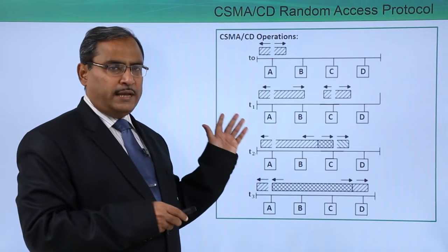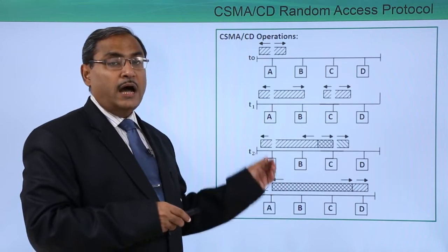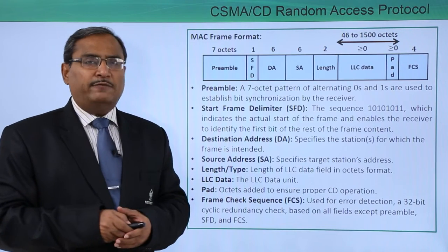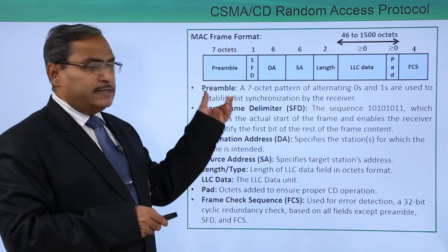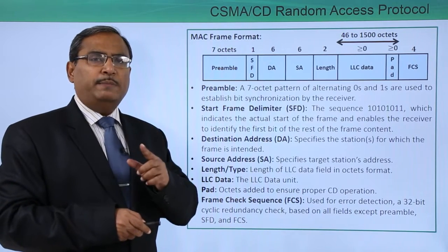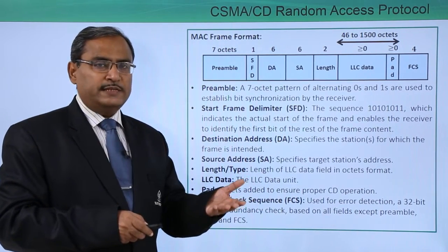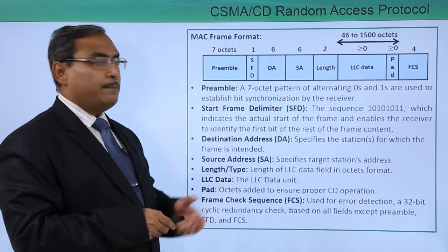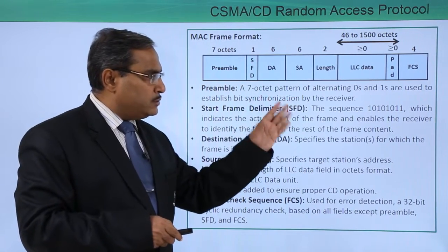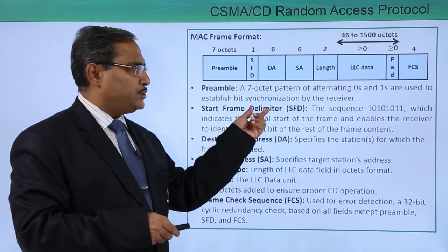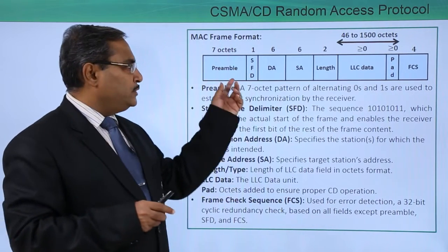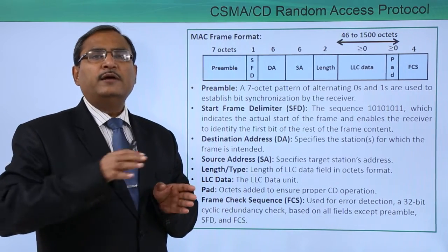We have discussed CSMA in detail in the earlier video; here we are discussing how collision detection is observed. The MAC frame format — Media Access Control frame format — in CSMA-CD begins with a preamble: the first 7 octets, meaning 7 bytes or 56 bits. This preamble is a 7-octet pattern of alternating 0s and 1s used to establish bit synchronization by the receiver. The pattern is 010101... repeated for 56 bits.